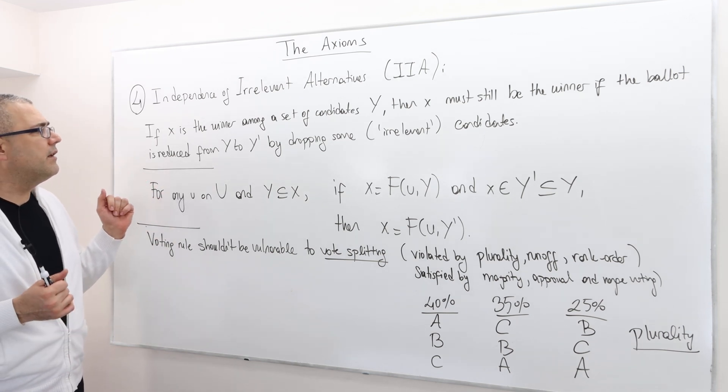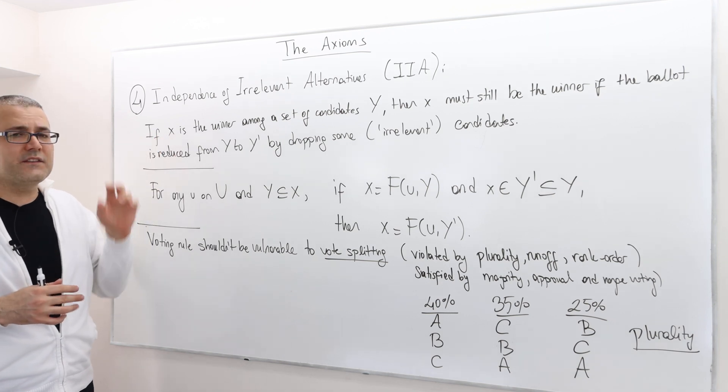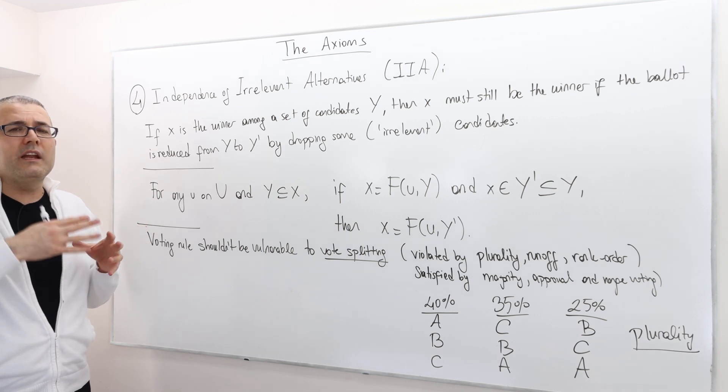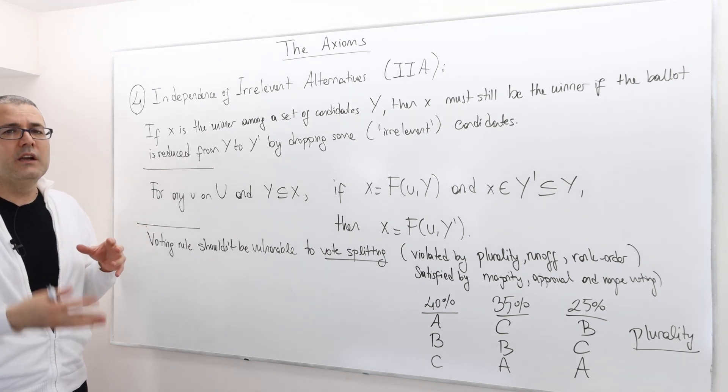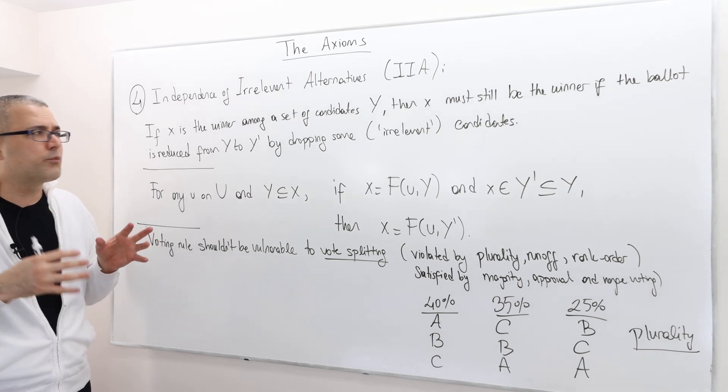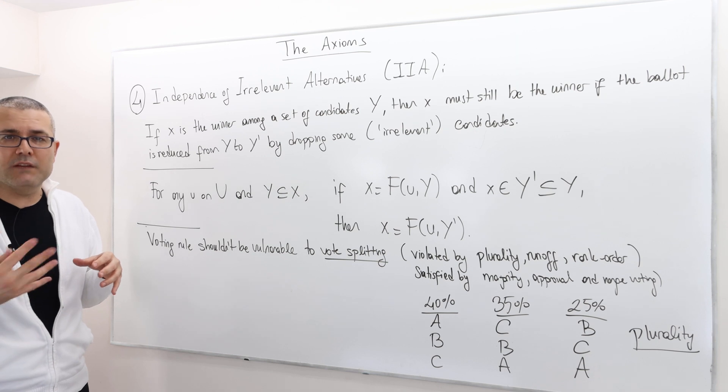The IIA basically assumes the following. If an alternative, a candidate X, is the winner from the set of candidates Y, then it should still be the winner if we reduce this set of candidates from Y to Y prime by dropping some unelected candidates or irrelevant candidates.